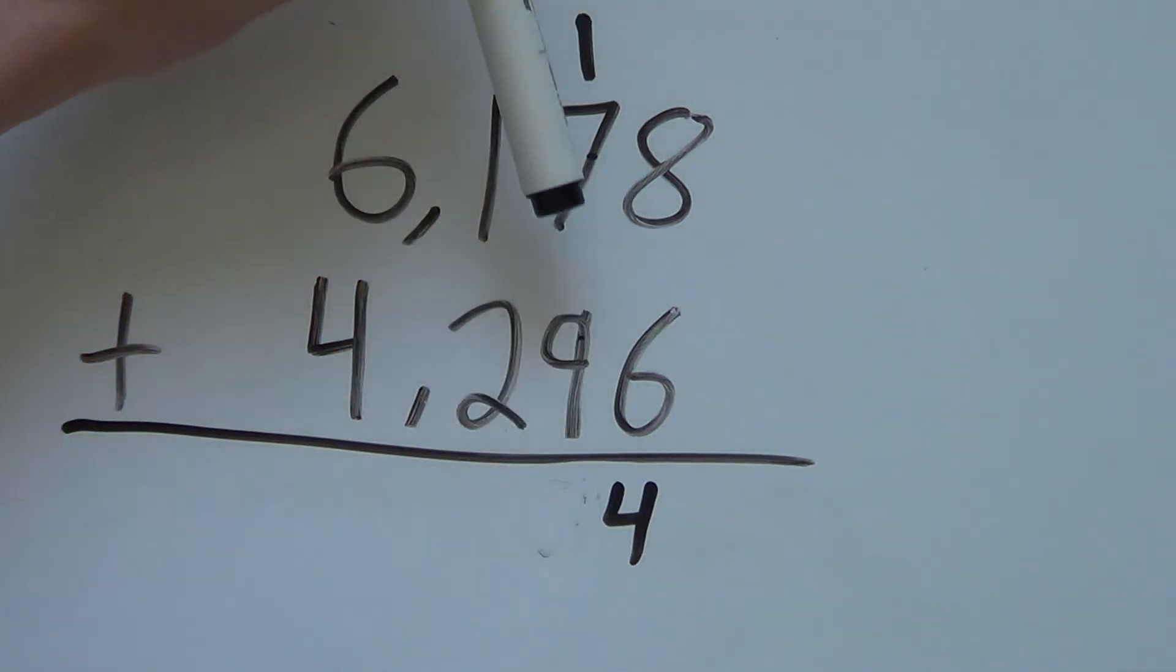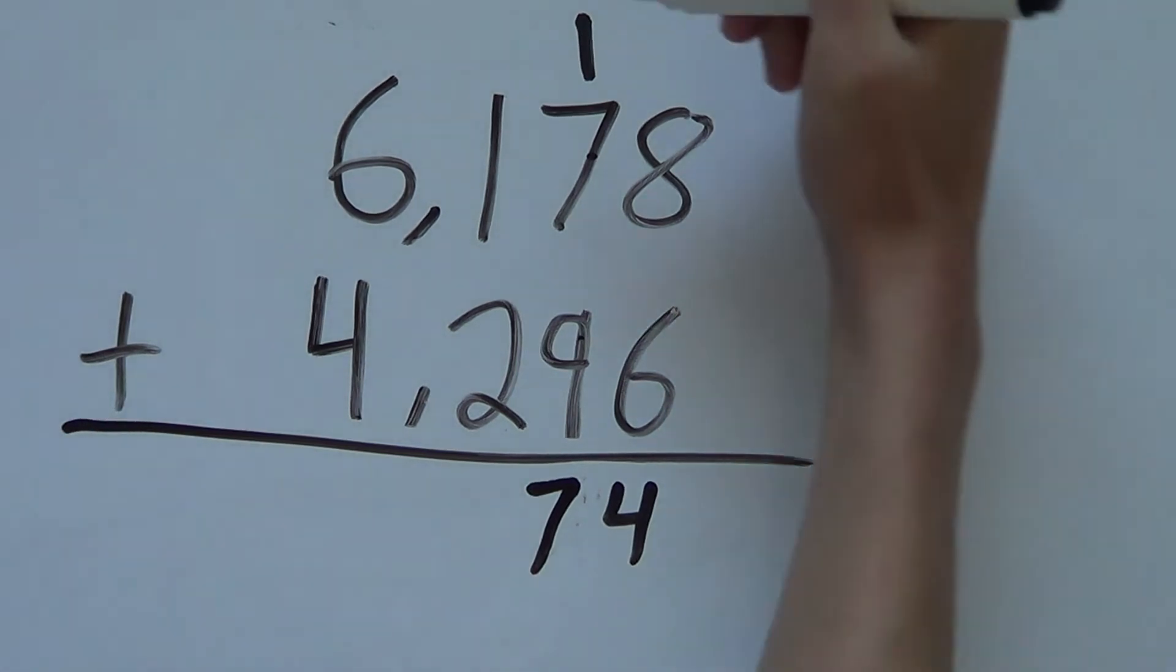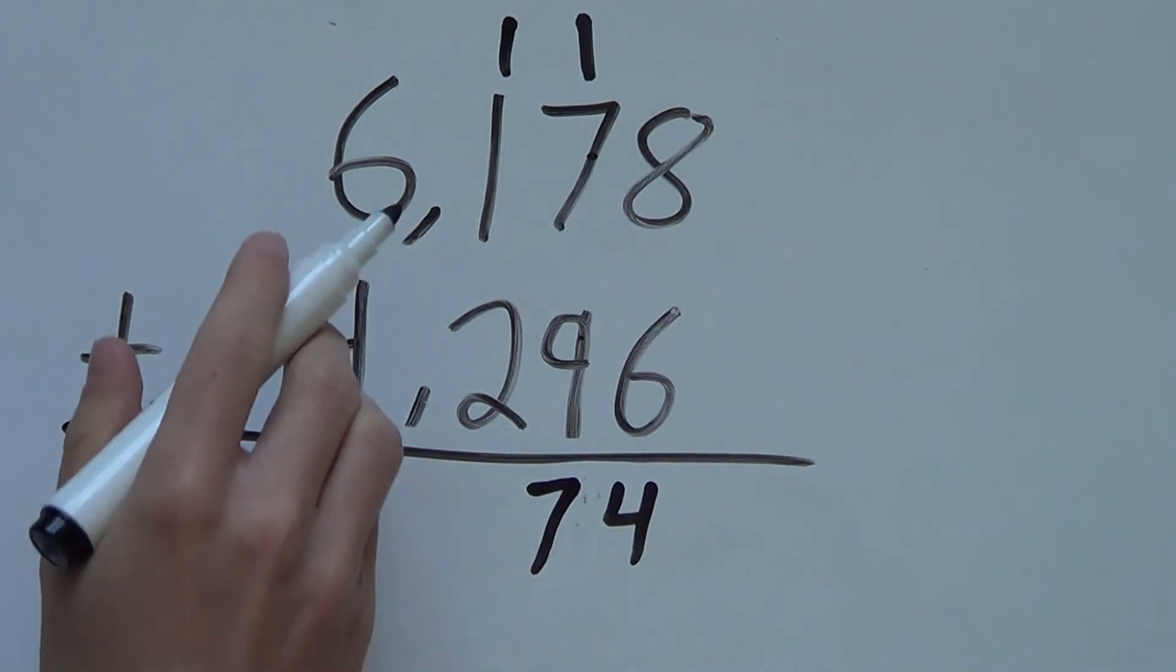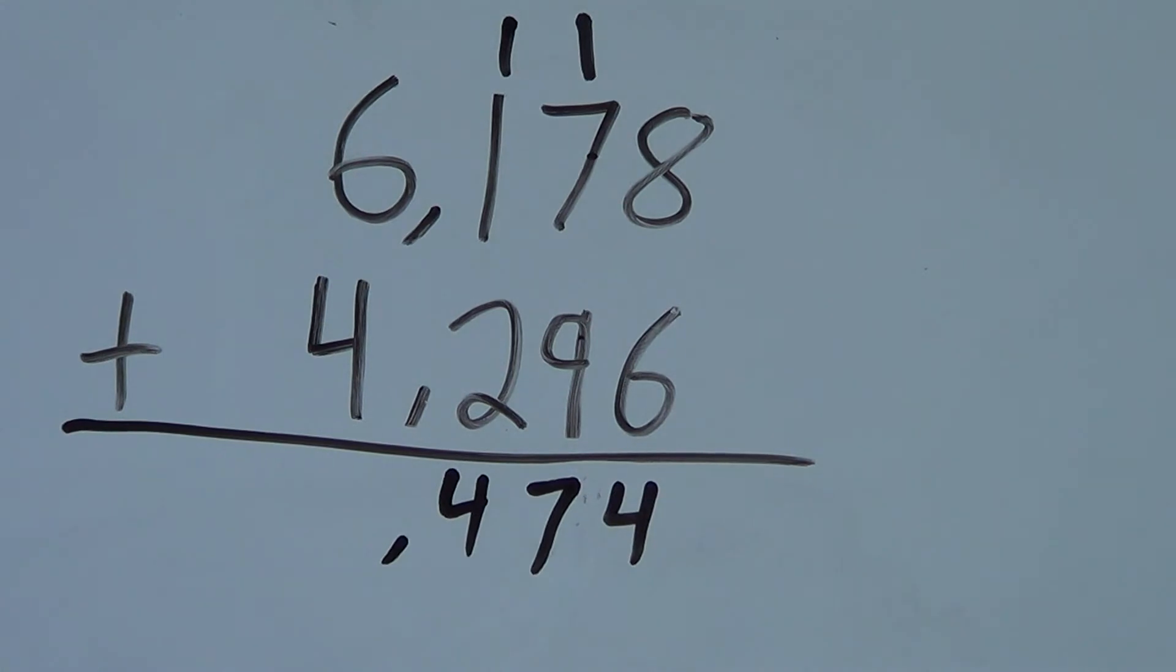So now we have 9 plus 7 plus 1. That's 17. So again, the 1 would be here. But we carry it up to the top. 17. We carry the 1 again. Next step is 2 plus 1 plus 1. That's 4. Nothing to carry this time. And our last column, we have 6 plus 4. That's 10.